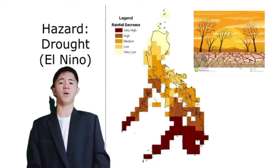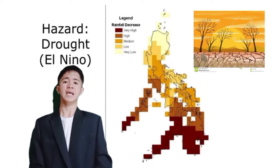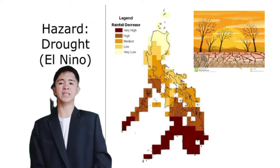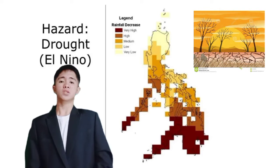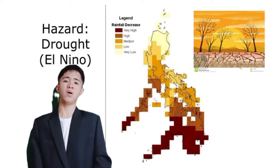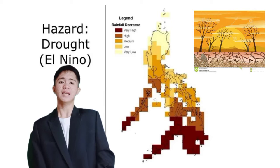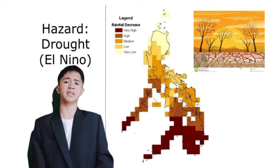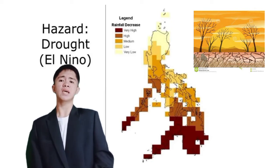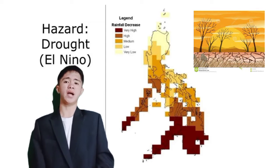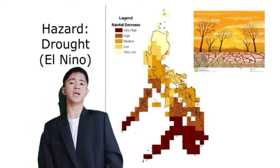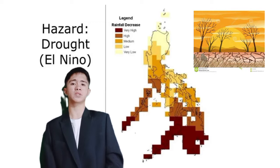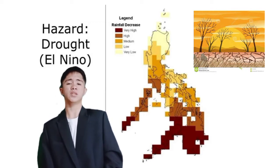This is the hazard map of drought in the Philippines. As you can see, the southern part of the Philippines is the most affected or has a high chance of drought. Mindanao has a high chance of drought because it is near the equator where sun rays hit the Earth's surface at a higher angle. Also, Mindanao doesn't experience many typhoons because of its location on the southern coast.